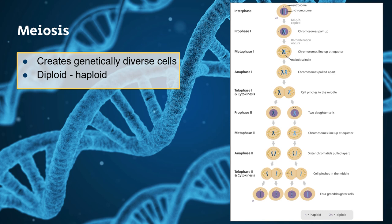Then metaphase one — again, they just line up in the middle at the equatorial plate. Anaphase one is when the homologous chromosomes separate and move to opposite sides of the cell. And then telophase one and cytokinesis — again, that septum is formed and the slow pinching off until they eventually become two different cells.